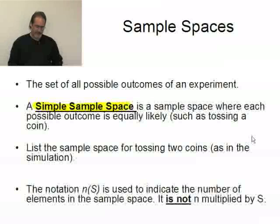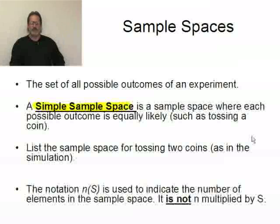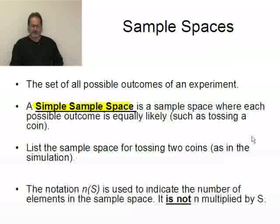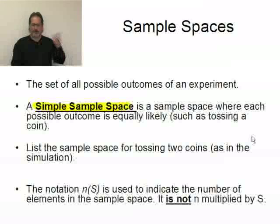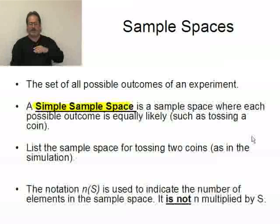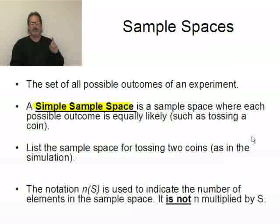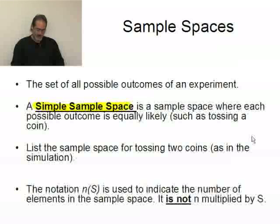A simple sample space is a sample space where each outcome is equally likely, such as tossing a single coin. The probability of a head is the same as the probability of a tail, assuming — and the assumption is kind of important here — assuming that the coin is fair to begin with.